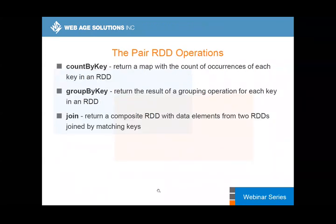Now that we've built a Pair RDD, what's next? The whole dance was around getting the data properly laid out for subsequent operations: countByKey, groupByKey, and join. Comparing with SQL, you'd recognize that groupByKey is essentially grouping by a particular value — perhaps a month — and countByKey would be the same grouping with a count in the select statement. Very straightforward and easy to use.